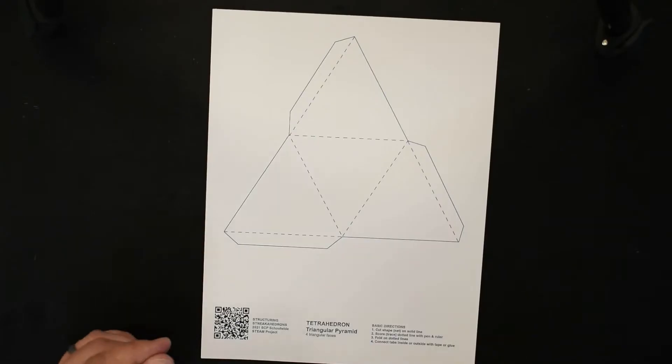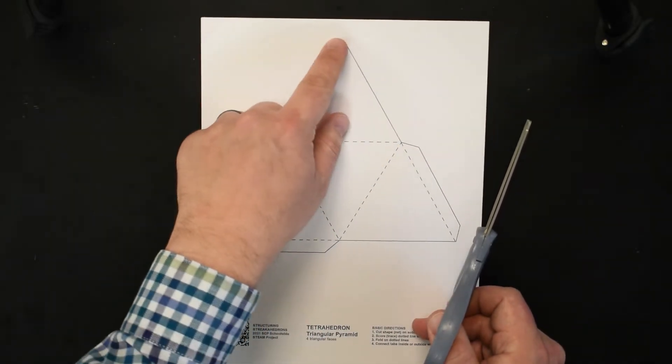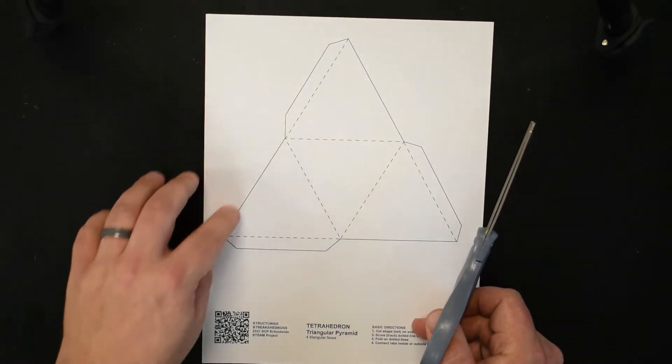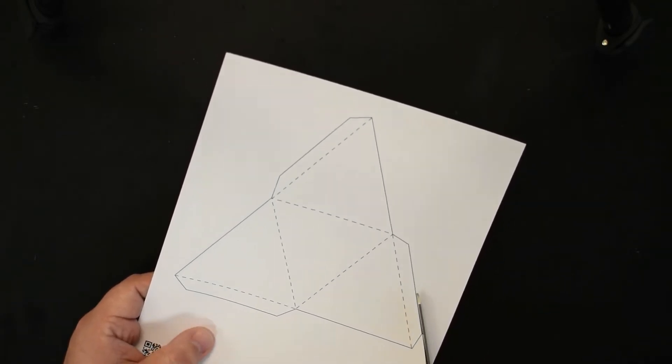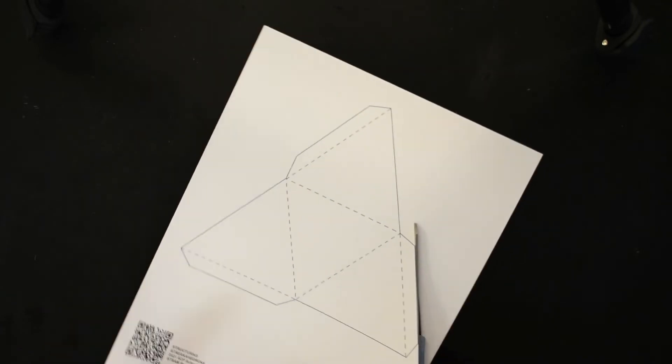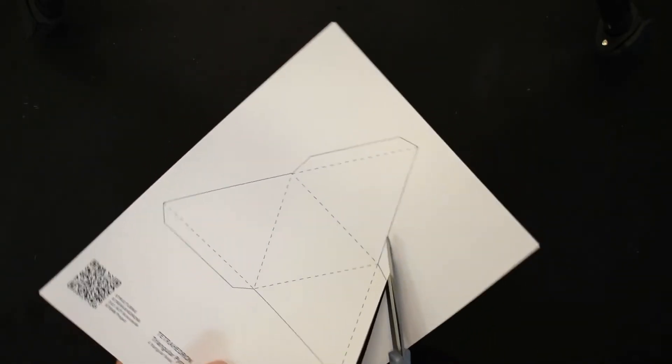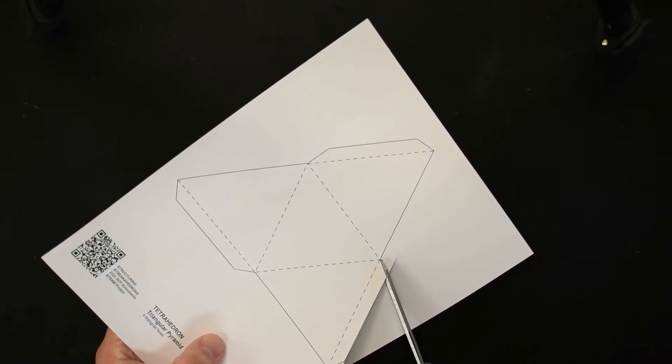The first step is to take your scissors and cut out the shape on all of the solid lines. Just get your scissors and start cutting. When you get to these outside corners, you want to pass over it a little bit so you can come in nice and crisp along the side.